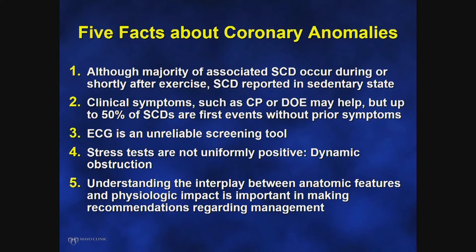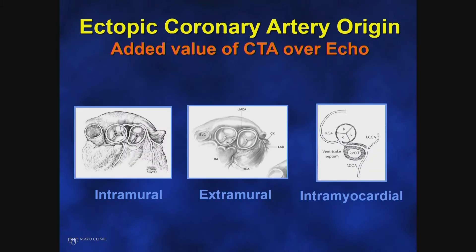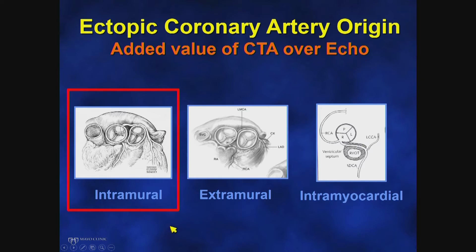Understanding the interplay between the anatomic features of the ectopic coronary artery and its physiological impact is critical for risk stratification. When evaluating an ectopic coronary artery with an interarterial course, CT scan provides added value over echocardiography in determining whether the artery is intramural — running within the wall of the aorta — extramural — passing between the aorta and pulmonary artery but outside the aortic wall — or intramyocardial, similar to a myocardial bridge. If the report does not specify this, you need an expert radiologist who can differentiate between these three, because the most serious anomalies have not only an interarterial course but also an intramural course within the wall of the aorta.